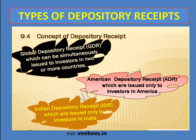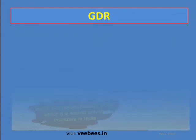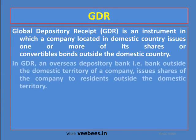A Global Depository Receipt is an instrument in which a company located in a domestic country issues one or more of its shares or convertible bonds outside the domestic country. For example, an Indian company can collect funds from the New York Stock Exchange, Japan, Germany, or any other country — from two or more countries.